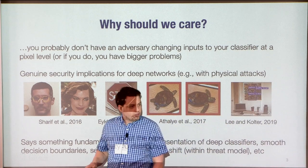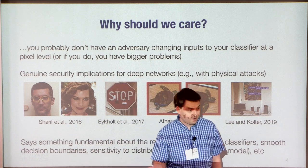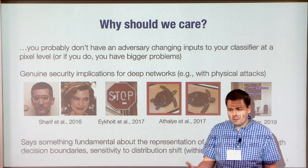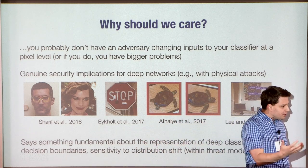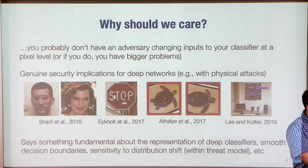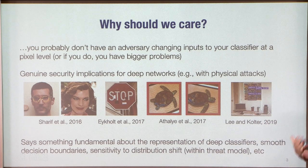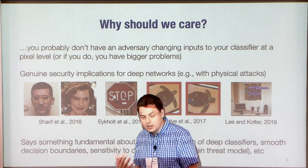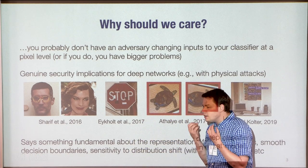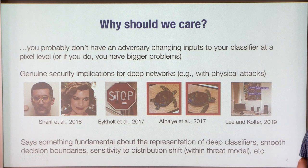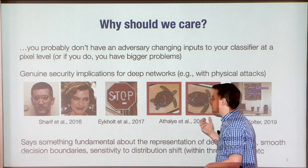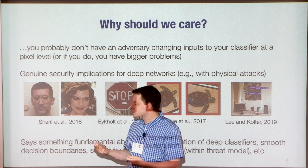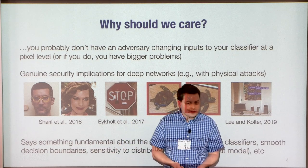Despite that, there are really a lot of very good reasons to still care about this. The first is there really are genuine security implications. We are starting to entrust AI systems to make predictions with real consequences. When you do this, you want some hope that they will work beyond just the exact dataset they were trained on. In mission-critical scenarios like self-driving cars or health decisions, the fact that attackers can fool these things does seem to be problematic.